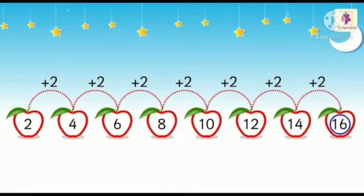By adding 2 after every number: after 2, adding 2 gives 4; adding 2 gives 6; adding 2 gives 8; adding 2 gives 10; adding 2 gives 12; adding 2 gives 14; and adding 2 gives 16. So this is the correct order — it is called a Pattern.